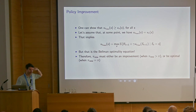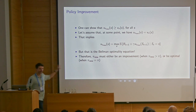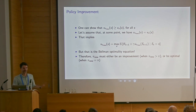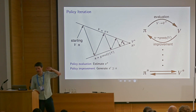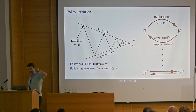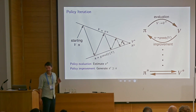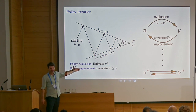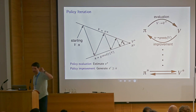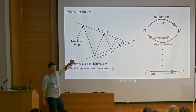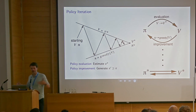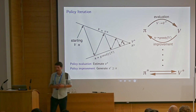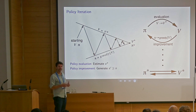Whenever the improvement stops — whenever a new policy does not attain a higher value — then you must have found the optimal policy. So not only does this process find the optimal policy, you can actually tell when it has found it. This is restricted to the full planning case where we have access to the full model and each policy evaluation step consumes all of the states. Schematically, you start at some combination of policy and value, find the true value for that current policy, make the policy greedy, re-evaluate the new policy, and repeat. At some point they stop changing and you've found the optimal value and optimal policy.